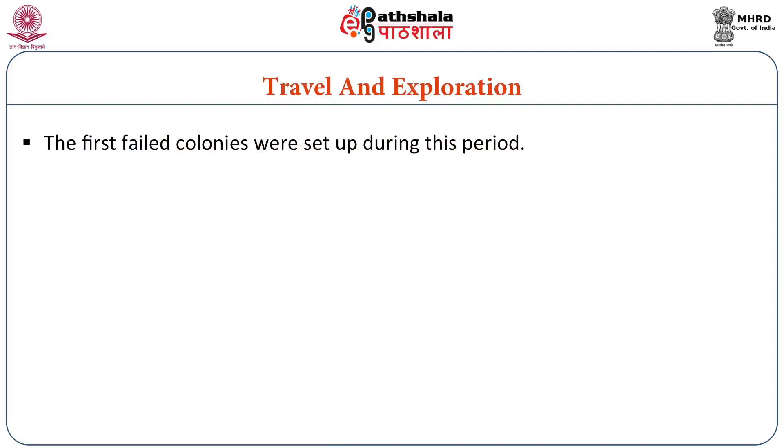Interestingly, the first colonies attempted during this period were total failures. There was a colony called Jamestown set up in 1607 which did not really succeed, and in the 1590s Walter Raleigh attempted to set up a colony which also failed. The first colonies were all failed, but the attempt itself was significant. We should also recognize that Renaissance England — approximately until the 1640s — is seen as the time when the first English embassy came to the court of Jahangir in India. In 1616, the English embassy headed by Sir Thomas Roe came to India, and this presence forms a major theme in English literature.